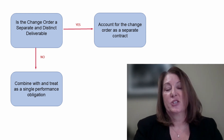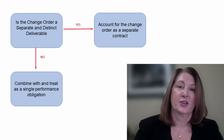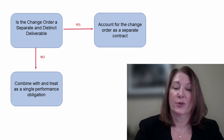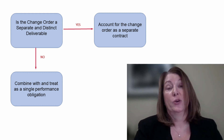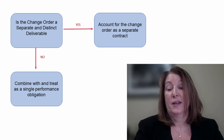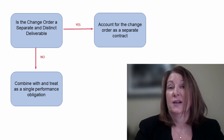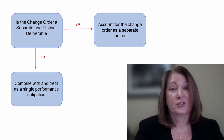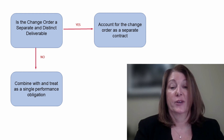If these conditions are not met, the change order is considered a part of the original contract and the original performance obligation — you will record it and include it with your original contract. Under ASC 606, change orders are accounted for as variable consideration.